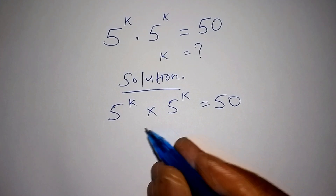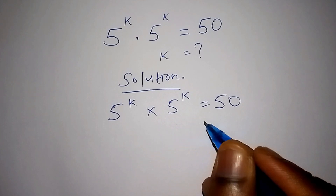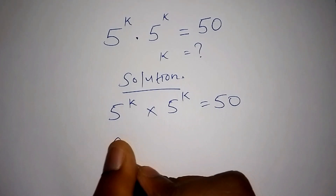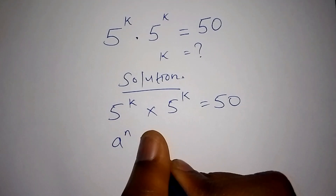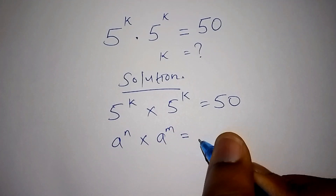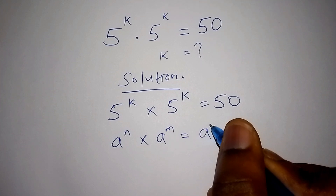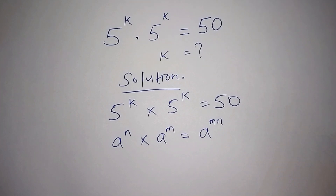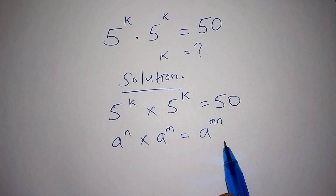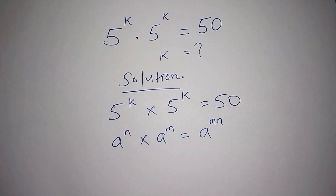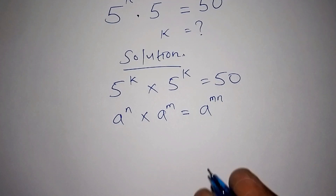Because we have this value here, we know that the law of exponents says that a to the power of n multiplied by a to the power of m should give us a to the power of m plus n. That is what we know, and now we can apply this formula to the expression we have up there.